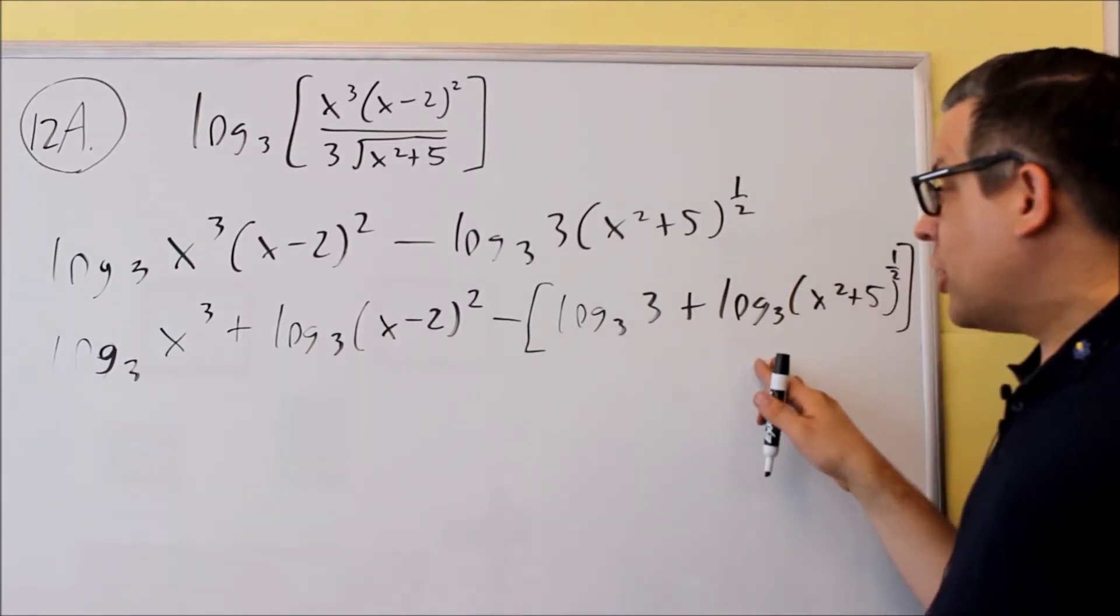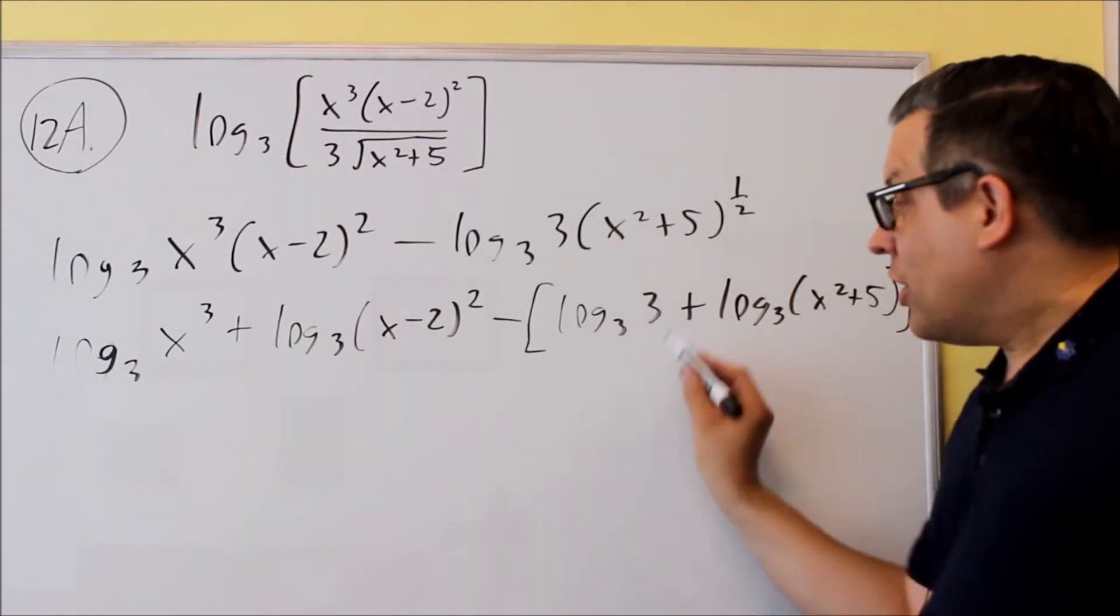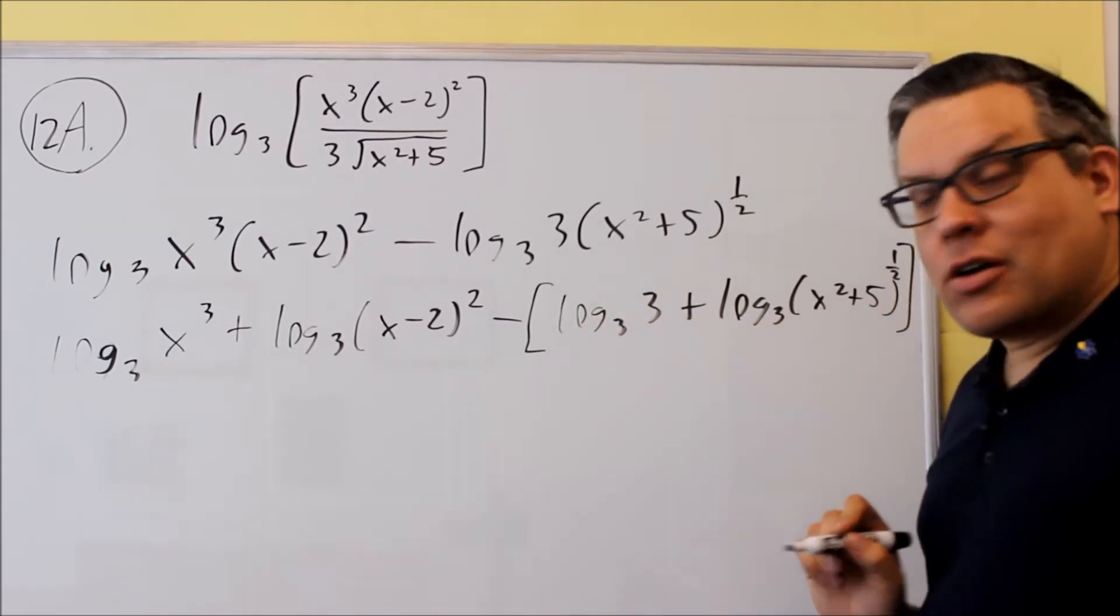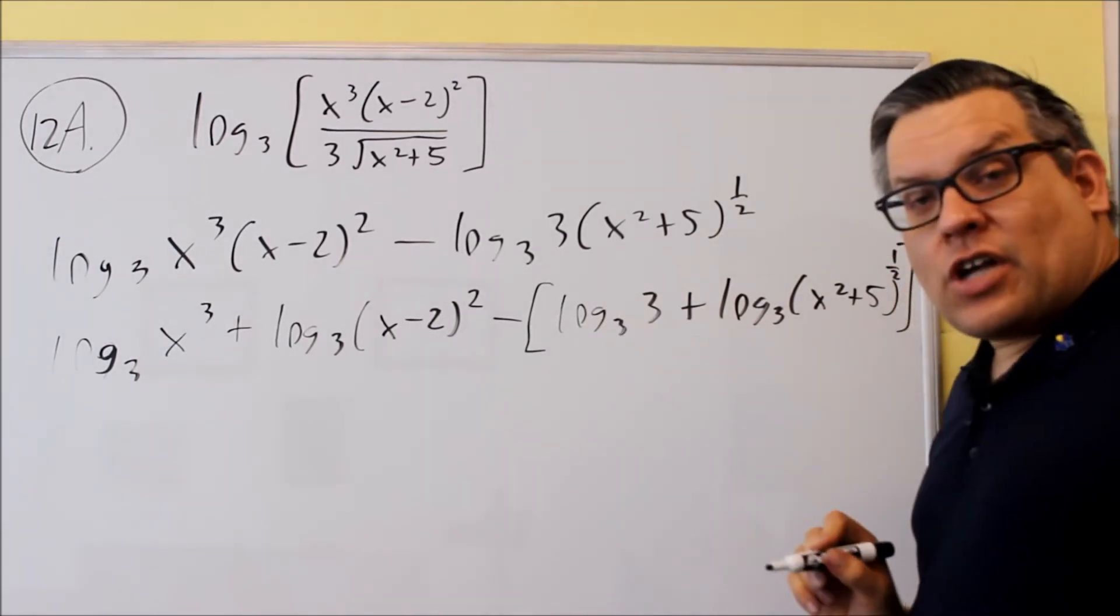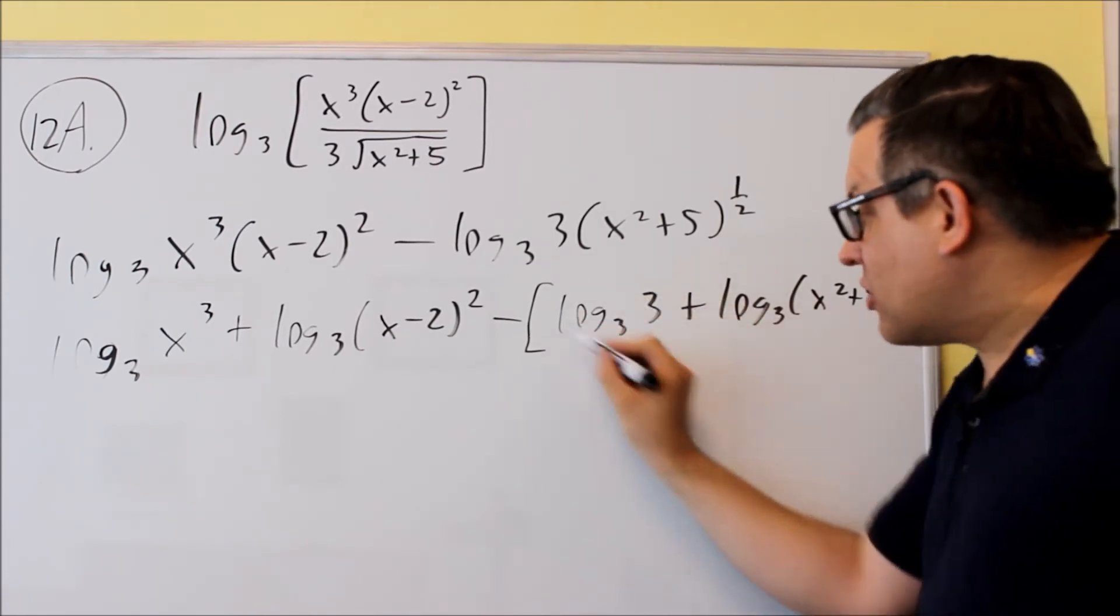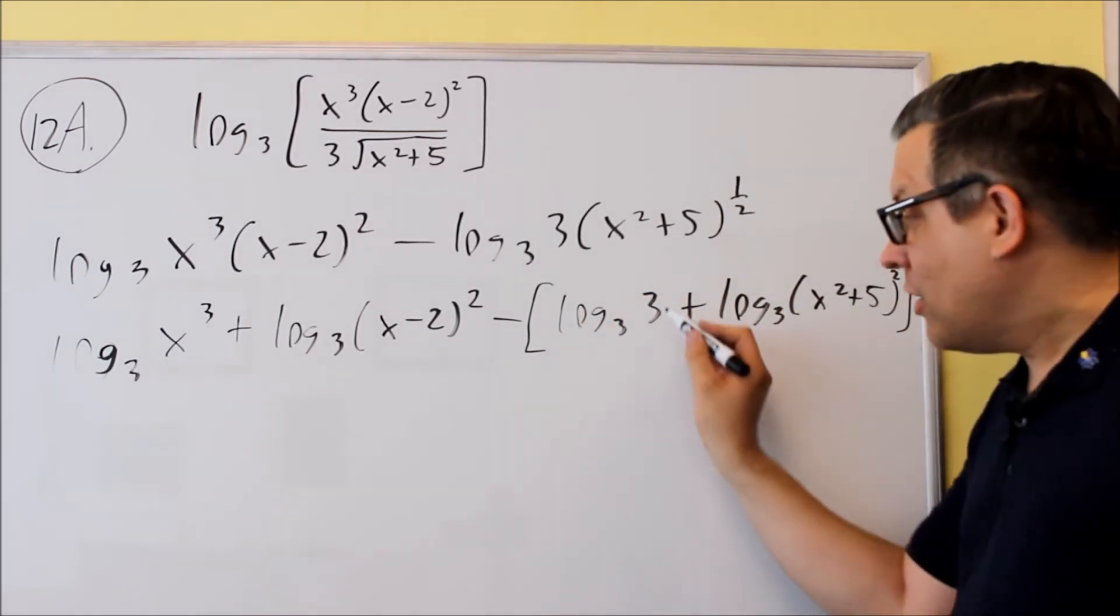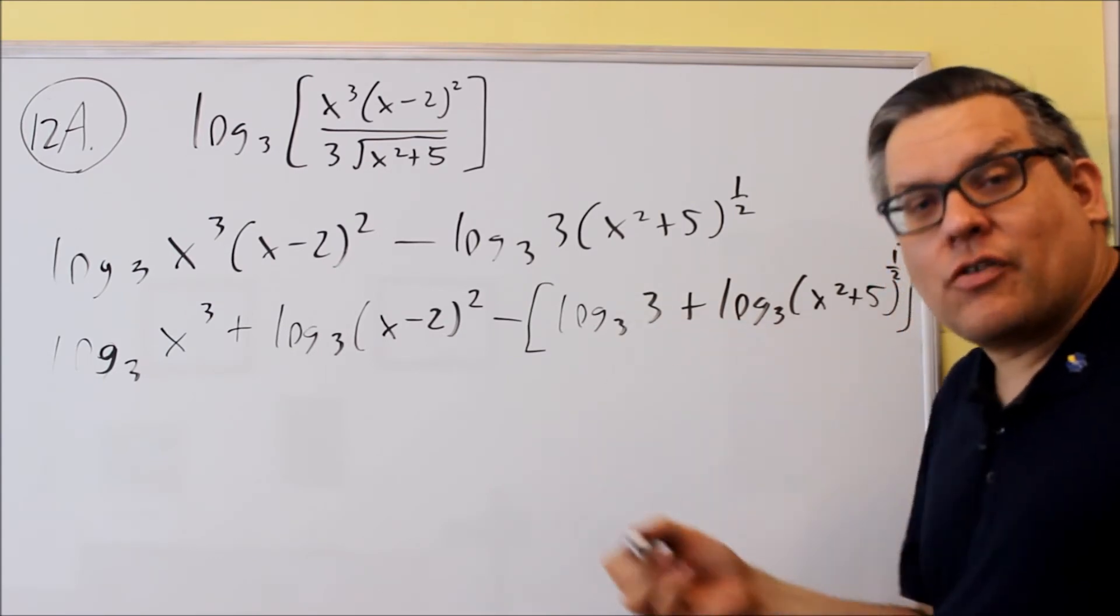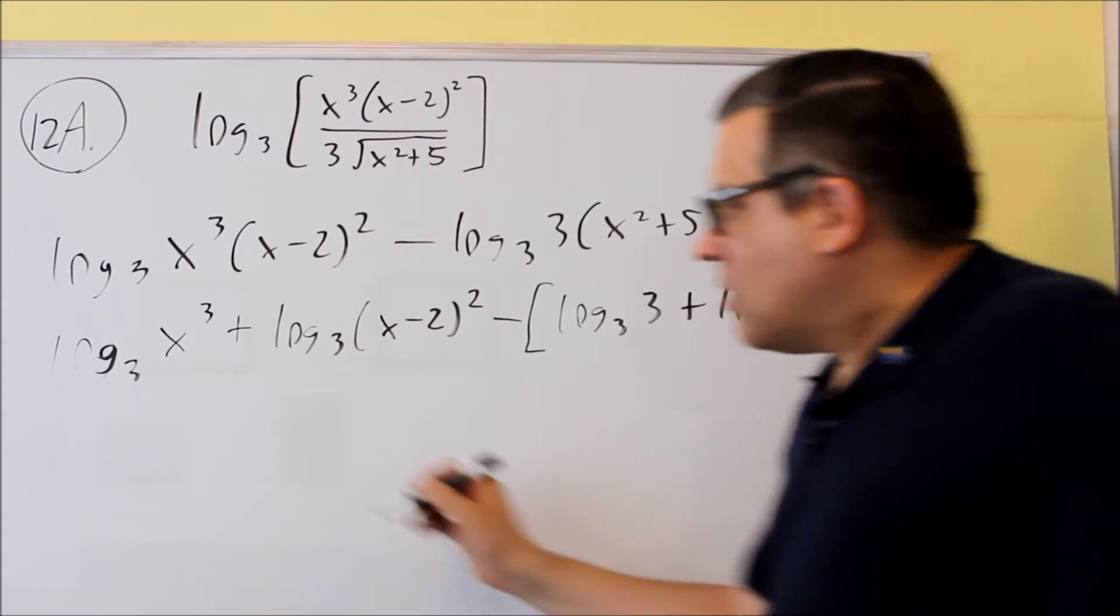The last thing I'm going to do is bring the powers down in front, and I notice I have a special log here. If these numbers match, I can turn that into a 1. Now if this was a 3 and a 5, for instance, then there's nothing I could do with that. I would just leave it as log base 3, 5, but if these are the same, then we can evaluate that and get an answer.